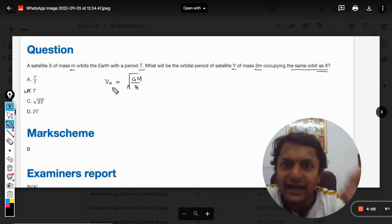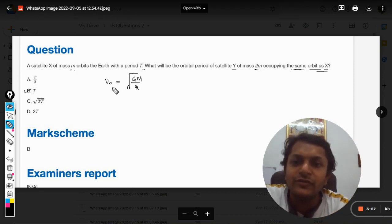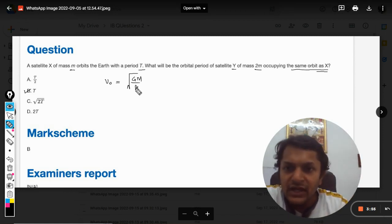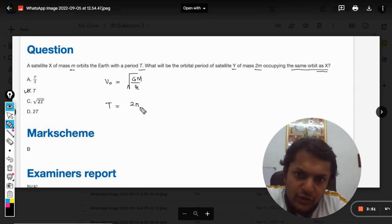That will be given by root of GM by small r. And the time period will be given by 2πr divided by the orbital velocity.